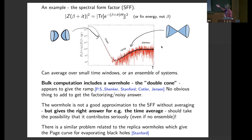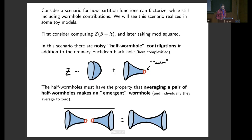There's a similar problem, a factorization problem related to the replica wormholes which give the page curve for an evaporating black hole, described by Douglas Stanford. So in this talk, we're going to consider a scenario for how partition functions can factorize while still including wormhole contributions. We're going to see this scenario realized in some toy models throughout the course of this talk.